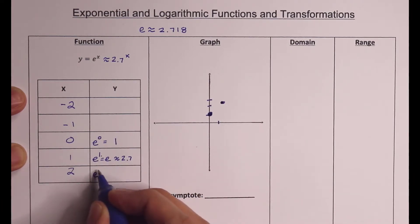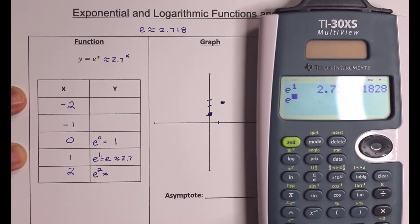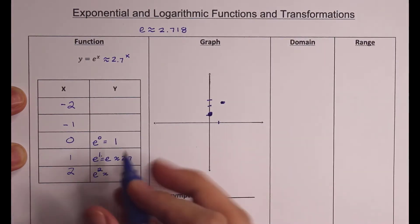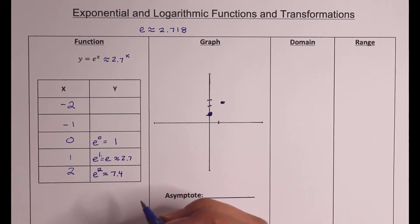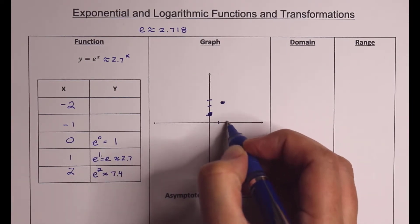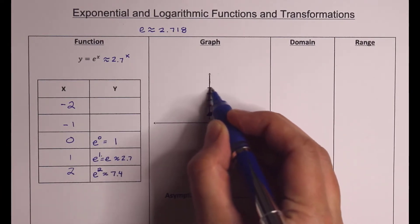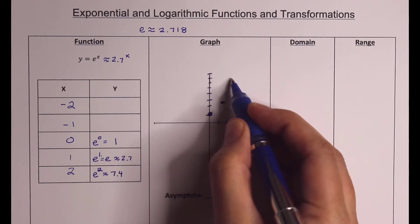Plugging in 2, that's e squared. Using the calculator, e to the 2nd power is about 7.4. So I plugged in 2 and I'm getting out about 7.4 — I'll go up on my grid and plot that point at roughly 7.4.